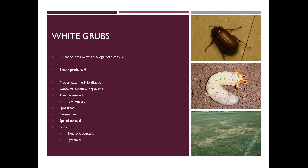Sometimes you may not see the white grubs themselves — it might be armadillos digging up your yard or grackles concentrated in one area that signals a white grub problem. We do have systemic products that can be used on turf to control these. When a systemic is applied, it gets taken into the plant tissue, so when the grub feeds on the roots it gets a dose of the pesticide and dies. You can put that out in the spring and it will kill those grubs that start feeding once they hatch.